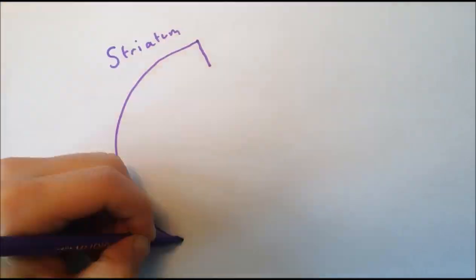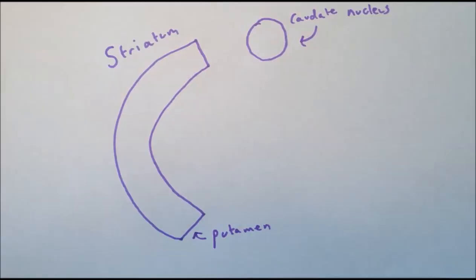The striatum is the largest part of the basal ganglia. It consists of two connected clusters of cell bodies, the caudate nucleus and the putamen, separated by a fibre tract. The vast majority of cells in the striatum are medium spiny neurons, which are inhibitory neurons.